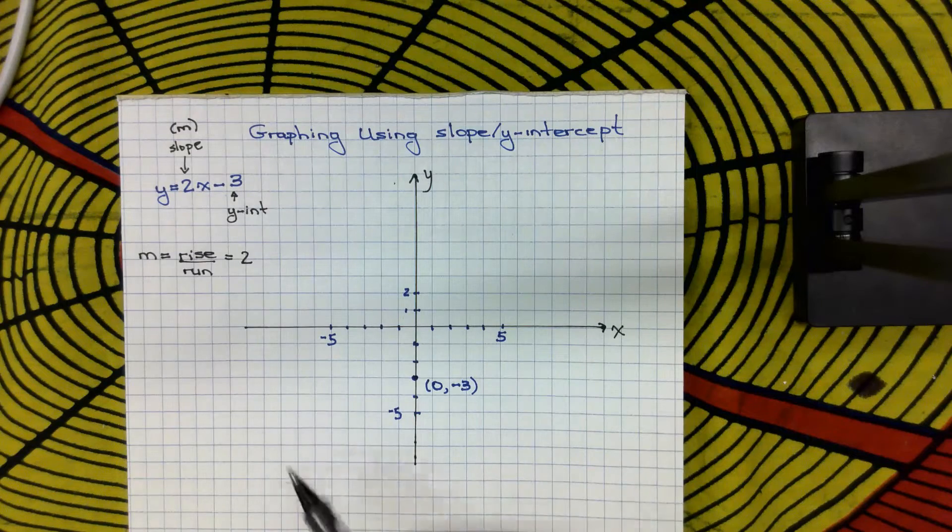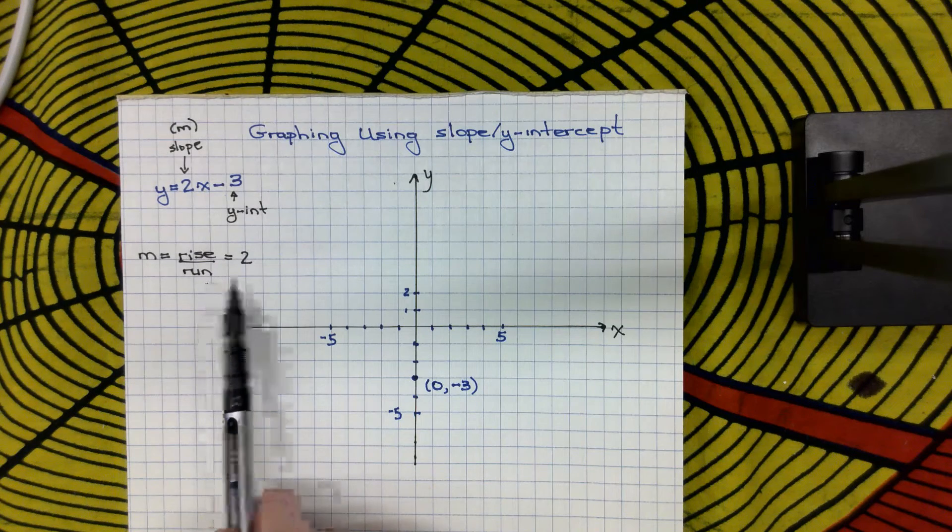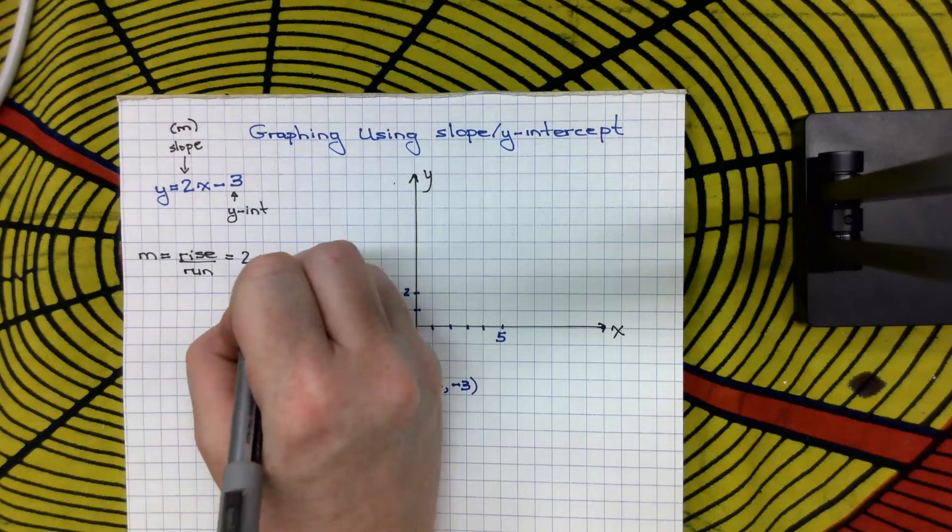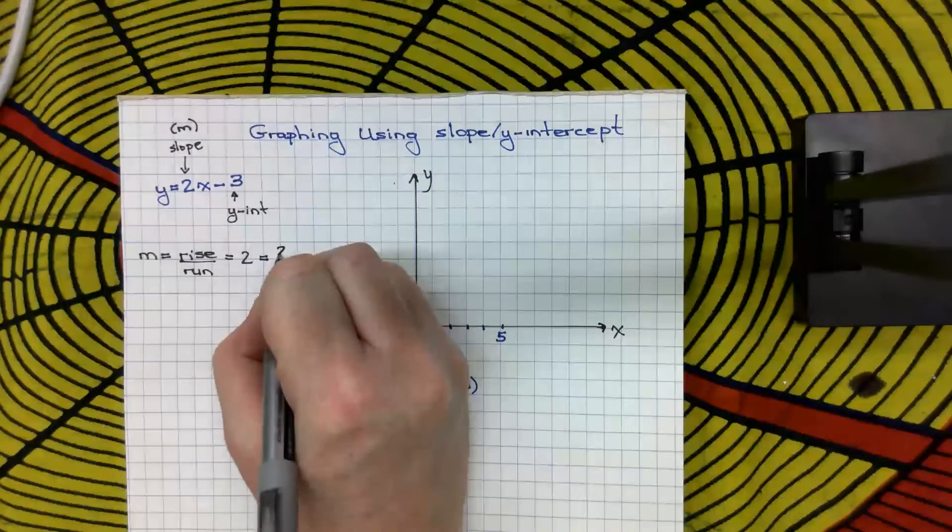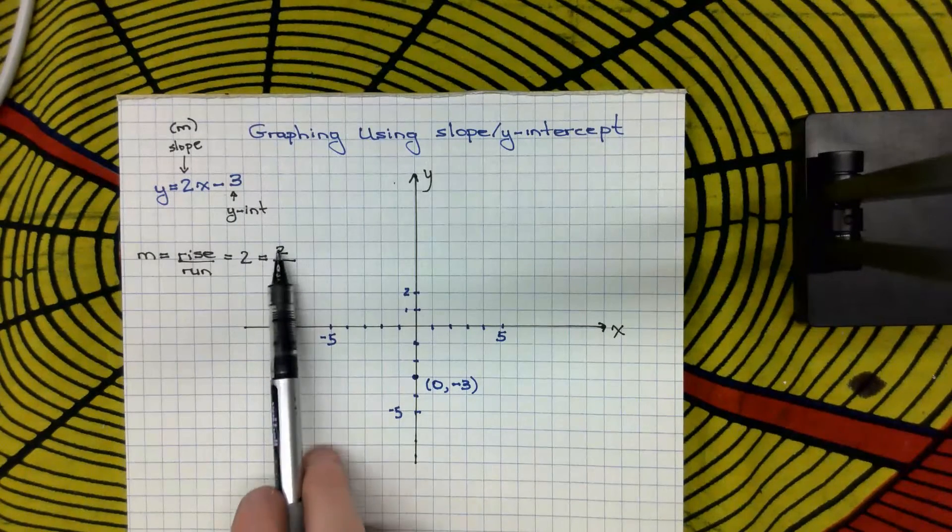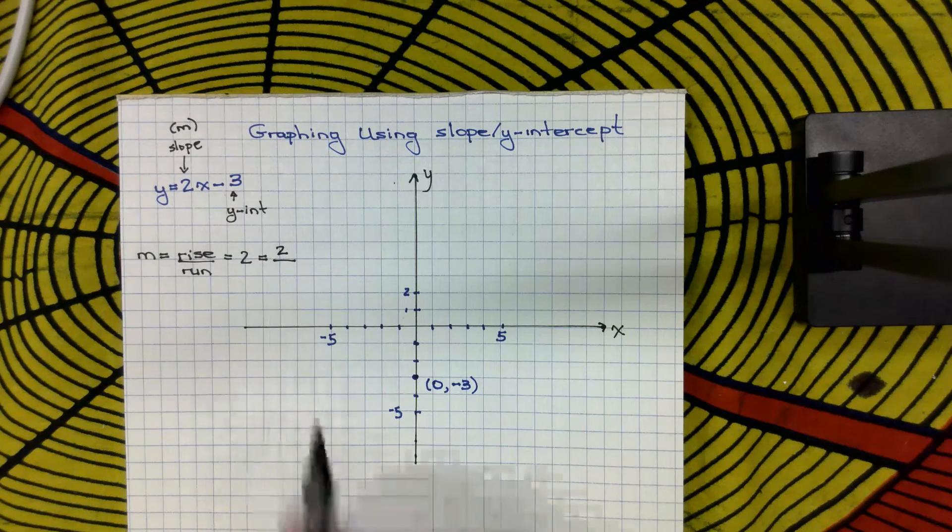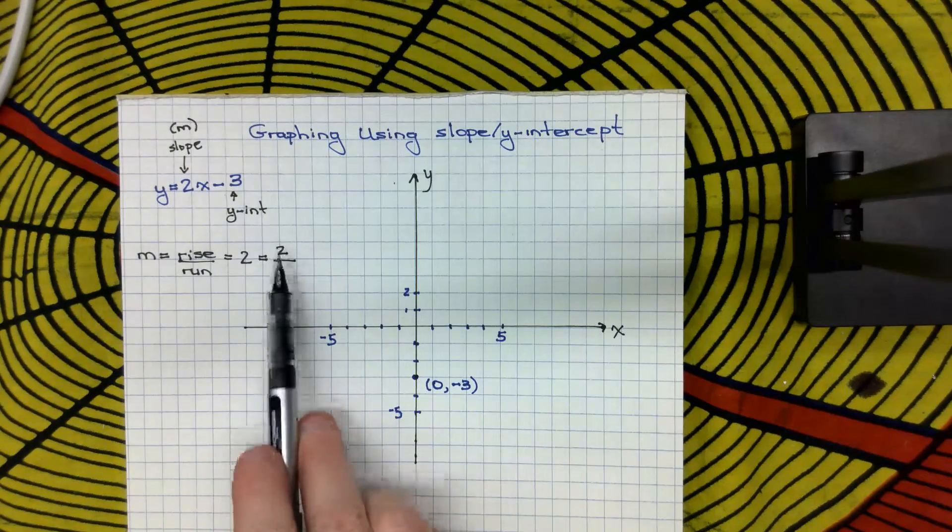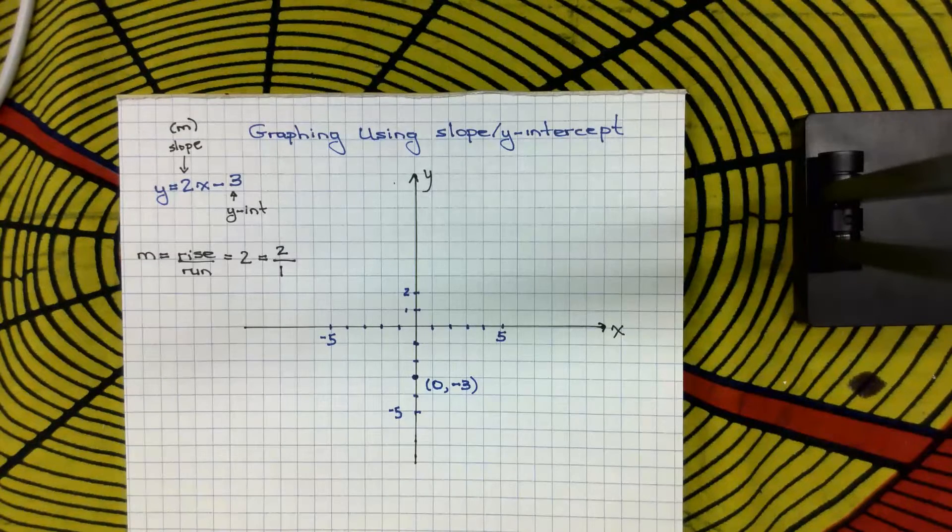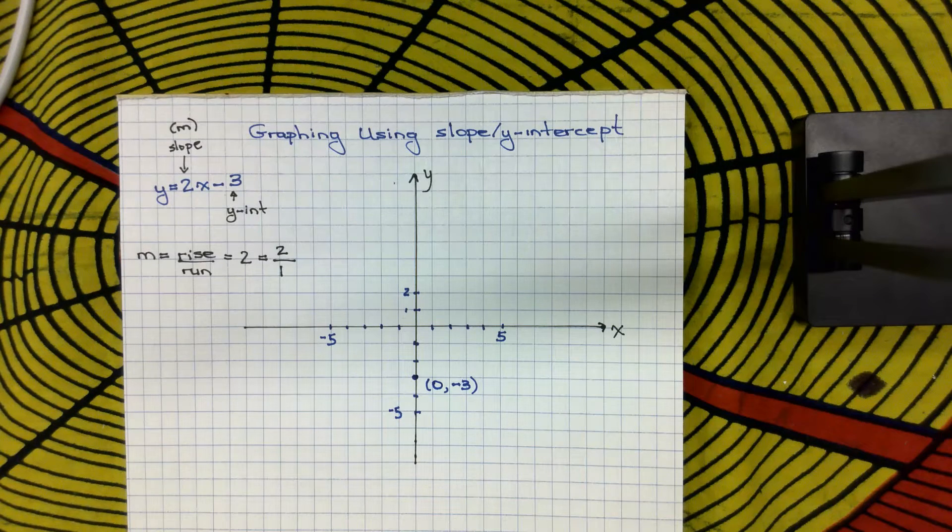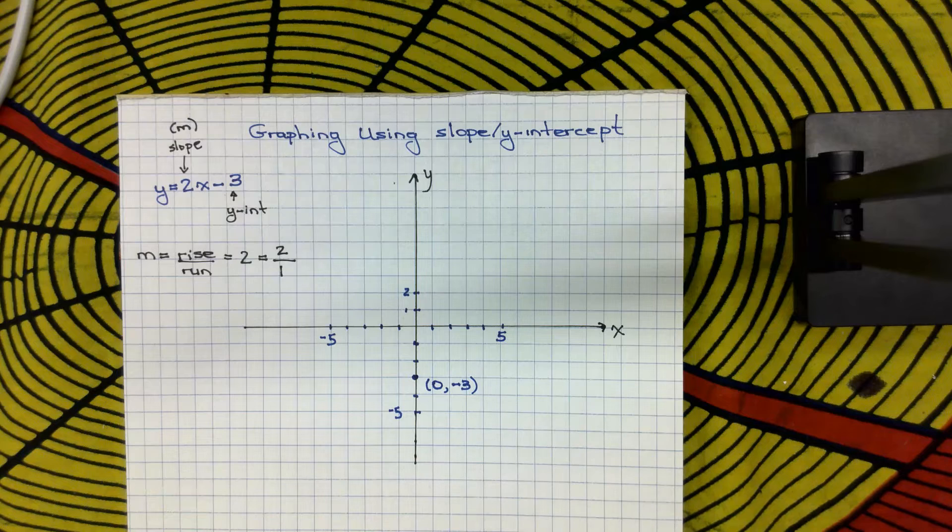And in this case, my slope is equal to 2. But you'll notice that when you're talking about slope, it's a rise over run. So I need to rewrite this as a fraction. So what I know is, since it's not in fraction form, that I have to put it into fraction form. Well, the only number I can divide a number by and have it stay the same is 1. So this is going to become 2 over 1, because 2 divided by 1 is just 2. So now I have a rise and a run, and I can use it to get my next point.